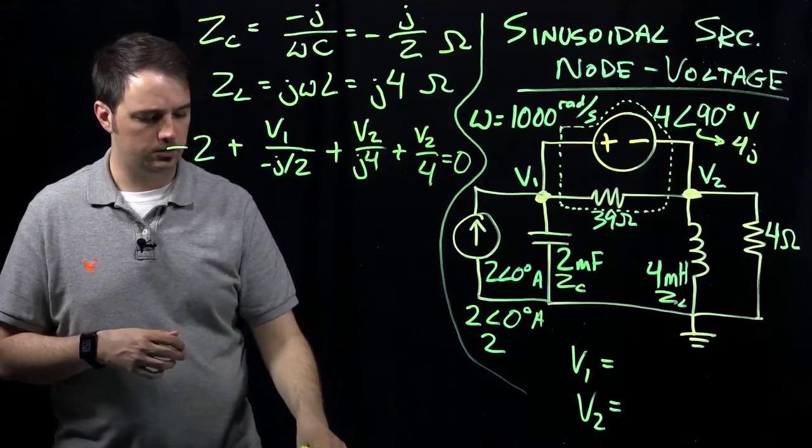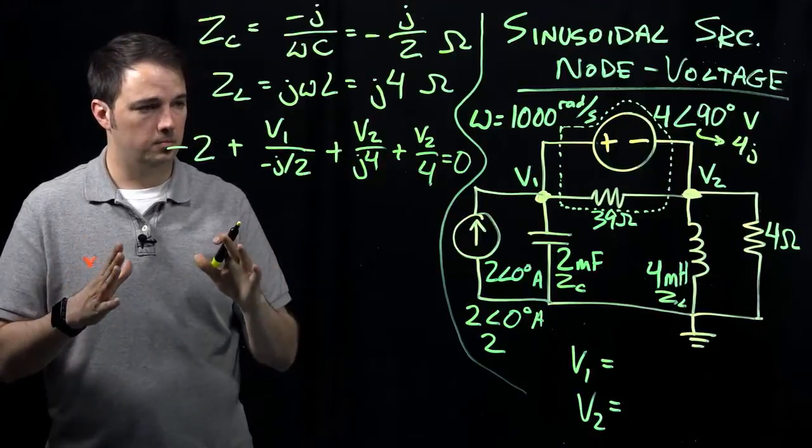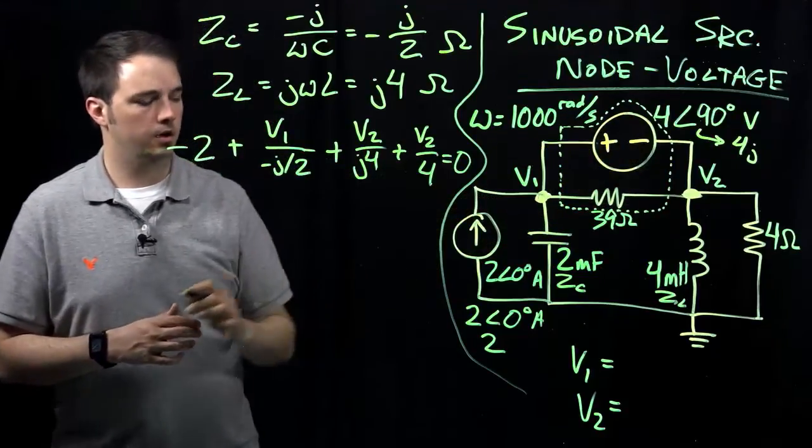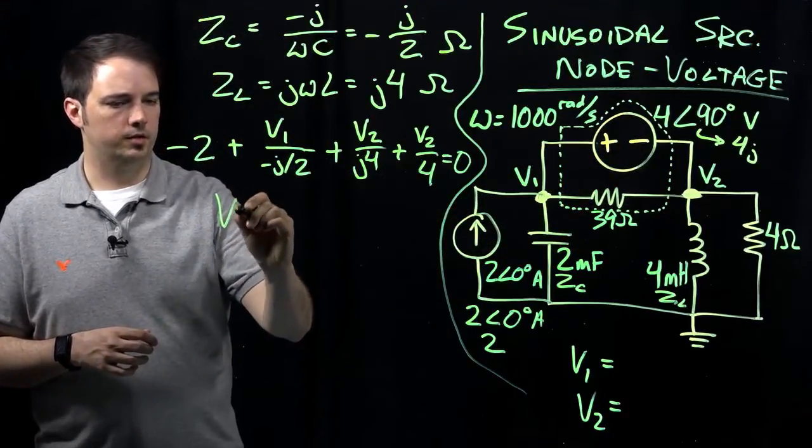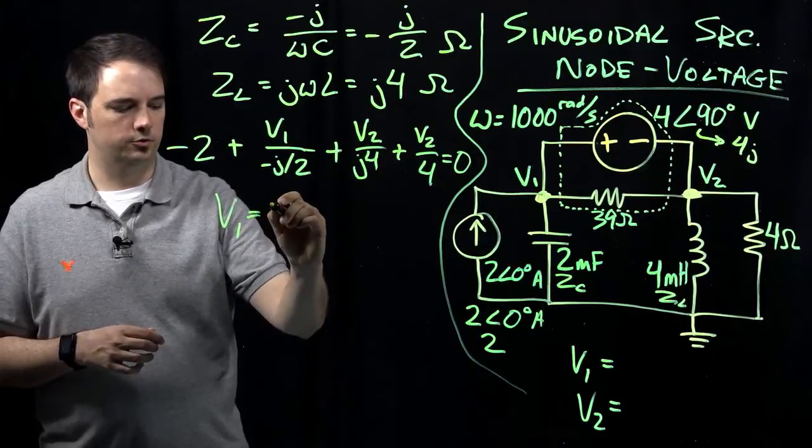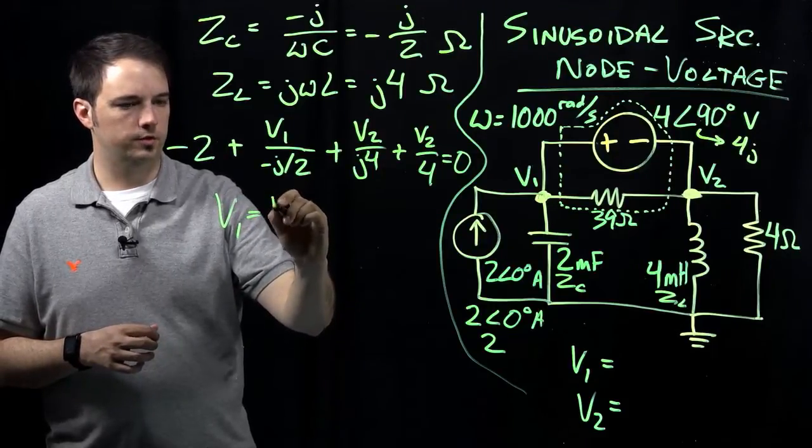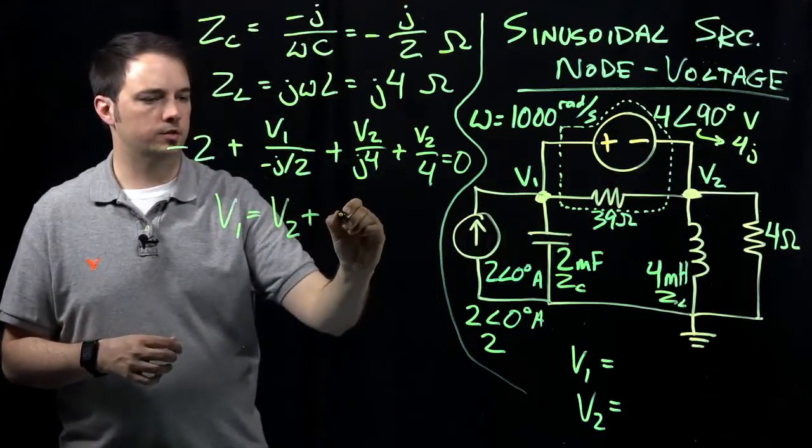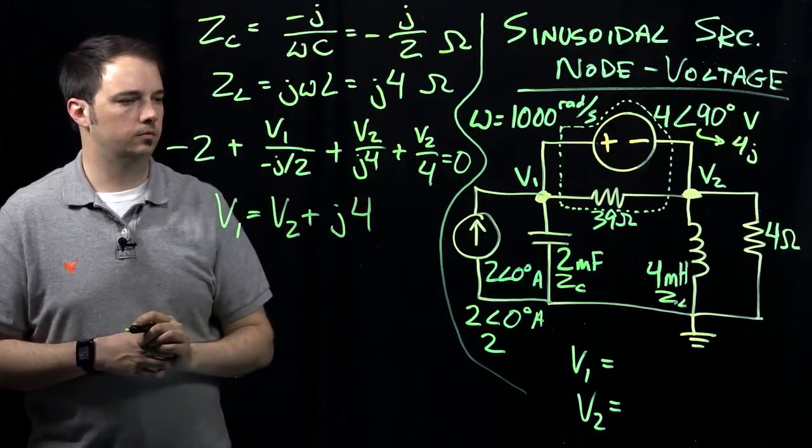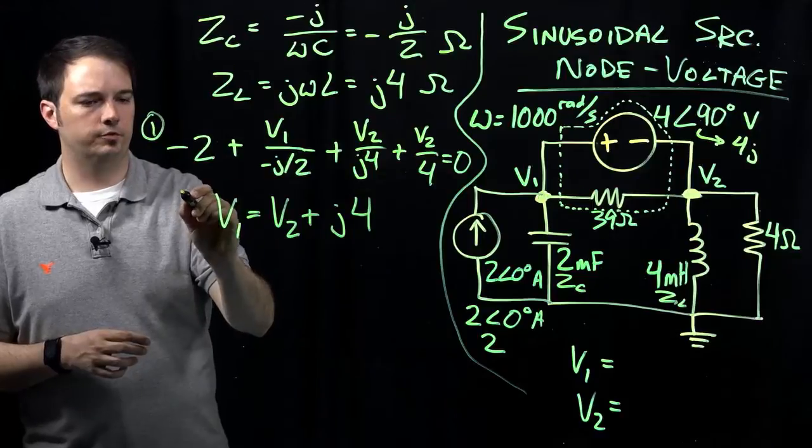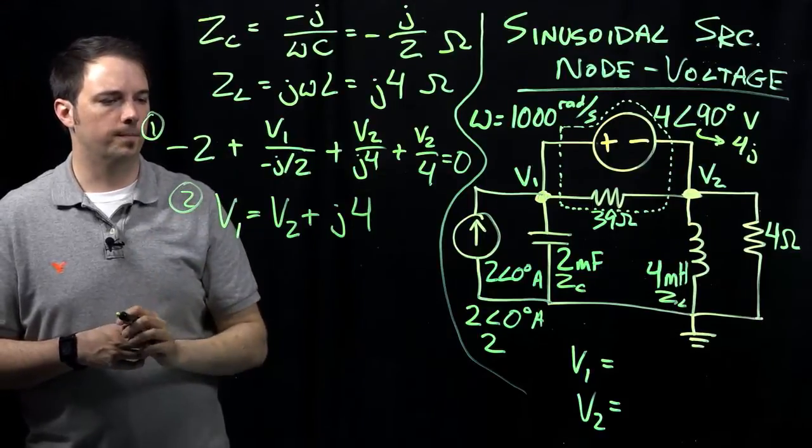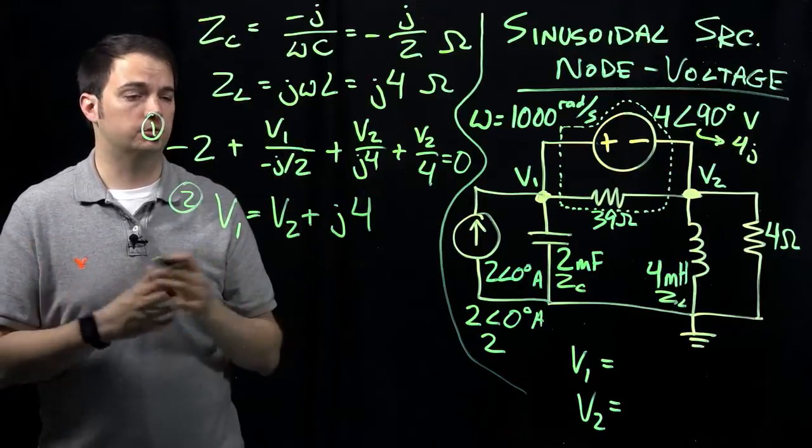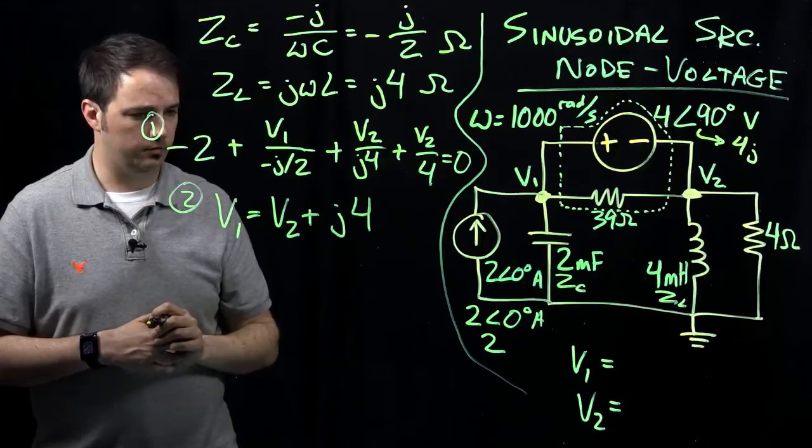Before I simplify things, let's write an expression to relate v1 and v2 to each other through this voltage source. This tells us that the voltage v1 is going to be equal to whatever the voltage v2 is plus this j times 4 expression. So we have two equations with two unknowns that will allow us to evaluate specifically what v1 and v2 are.